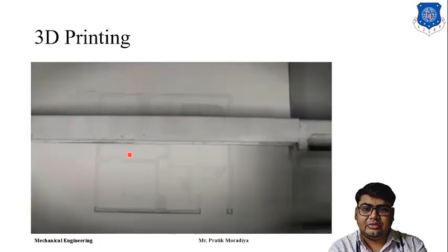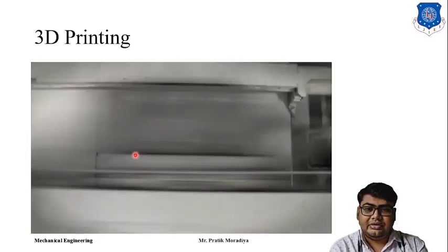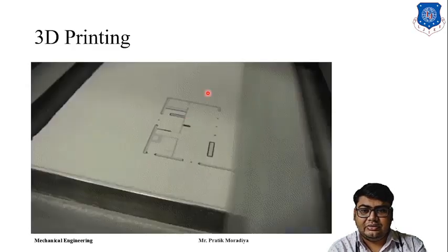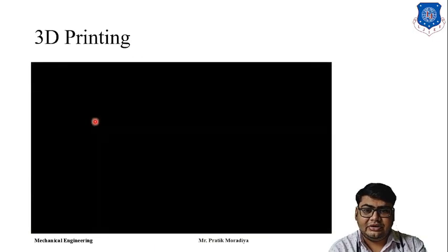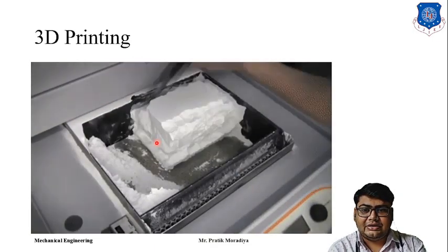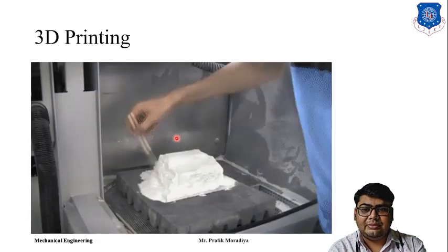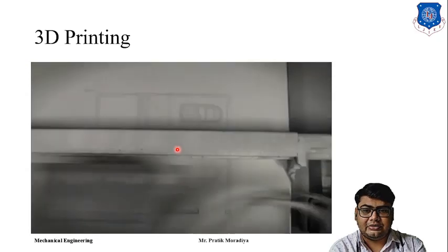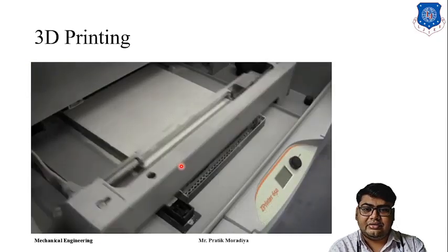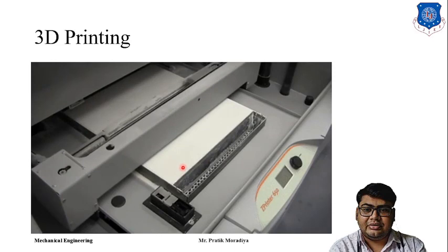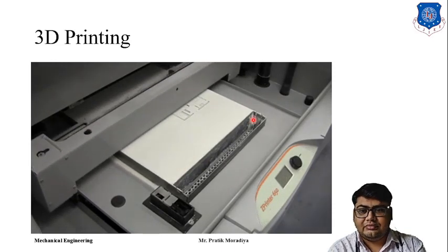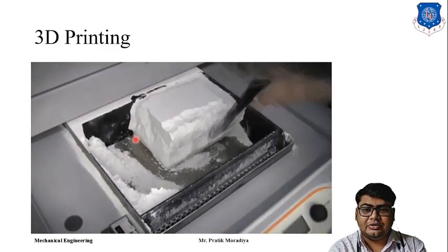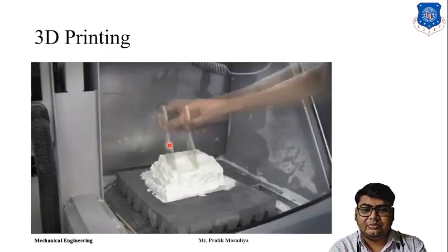In the actual process, we can visualize new powder being spread and the inkjet printing the binder. Once the part is complete, it remains embedded in the powder bed, so we have to remove the powder and clean the part. A new layer is added each cycle until the process is finished.